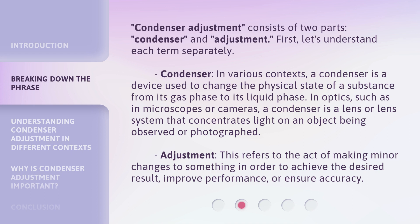In optics, such as in microscopes or cameras, a condenser is a lens or lens system that concentrates light on an object being observed or photographed. Adjustment refers to the act of making minor changes to something in order to achieve the desired result, improve performance, or ensure accuracy.